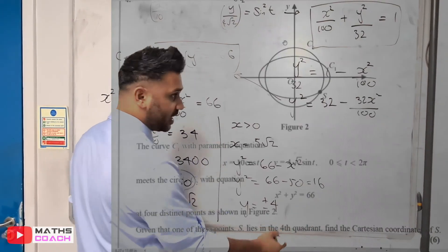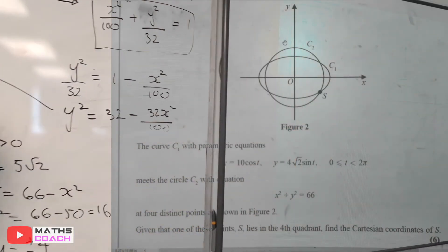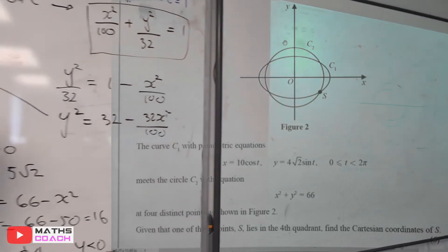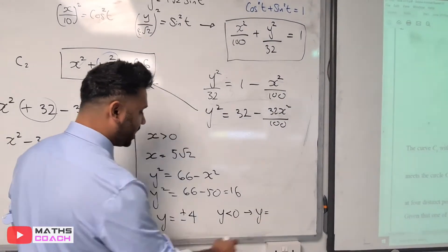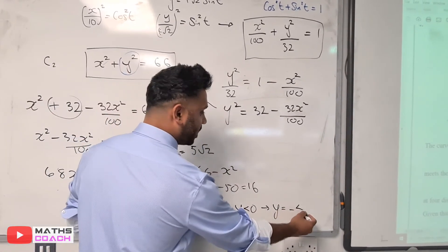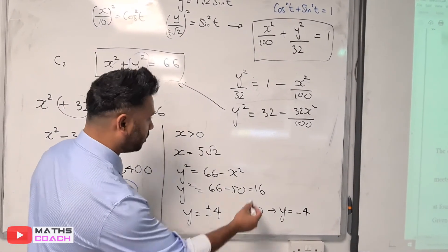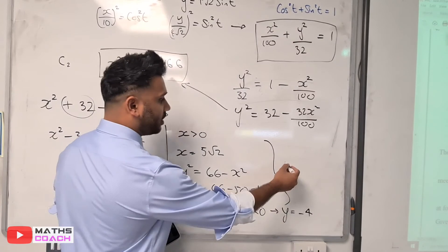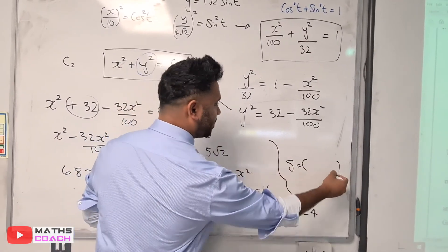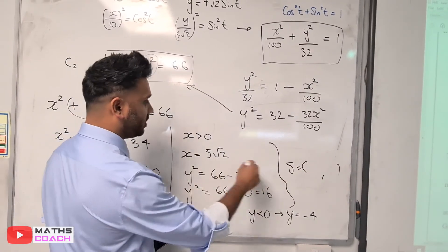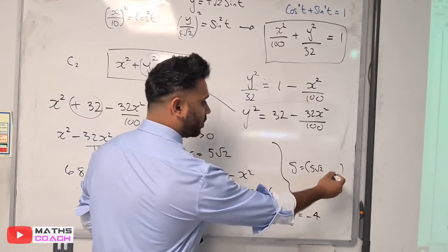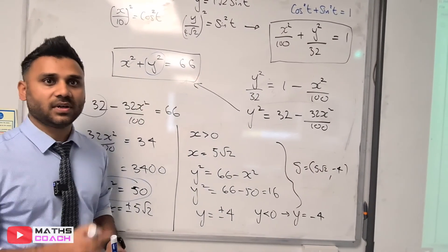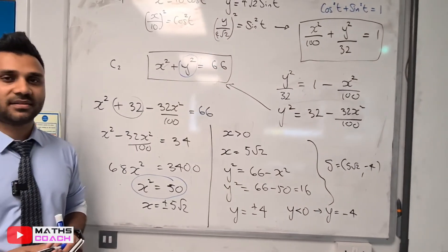But if you look at the S coordinate, the y value has to be less than zero, which is negative. So we take the negative solution, which is -4. Therefore, the coordinate of S is x = 5√2 and y = -4, giving us the coordinate (5√2, -4).